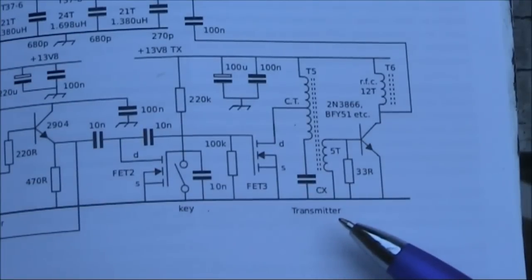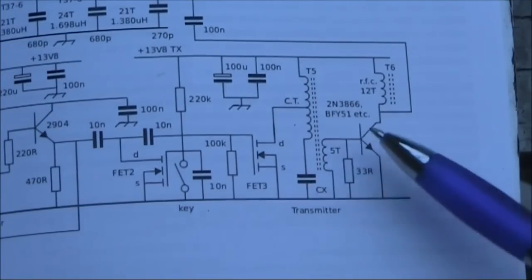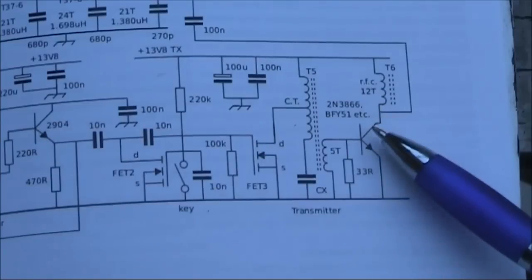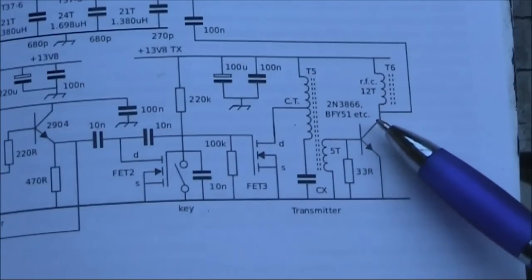One of these subtleties is in the transmitter power output stage. Notice how the transistor specified are either a BFY51 or TIP3866. Both of them are okay on seven megahertz, which is the transmitter's design frequency.